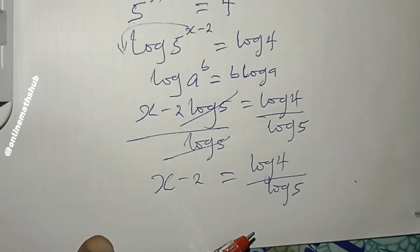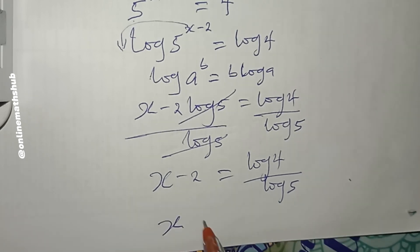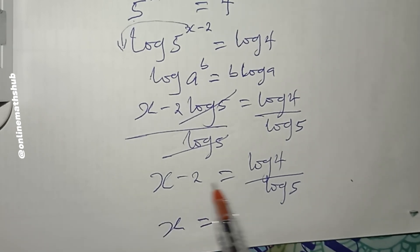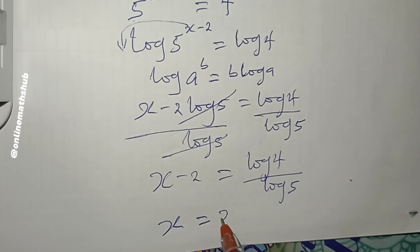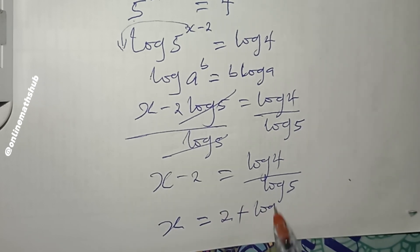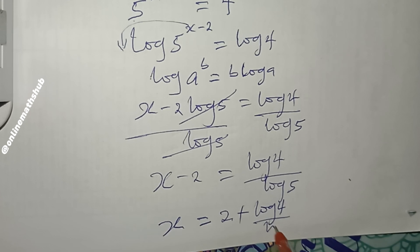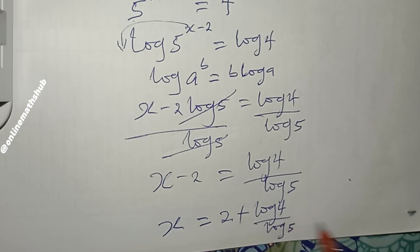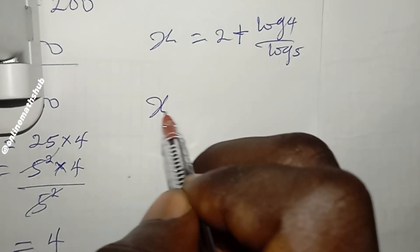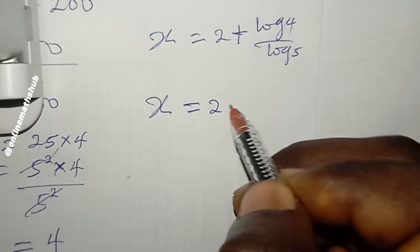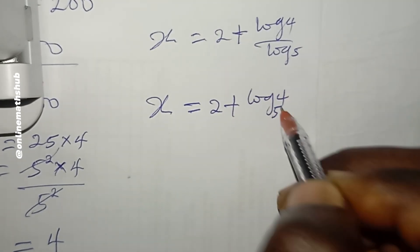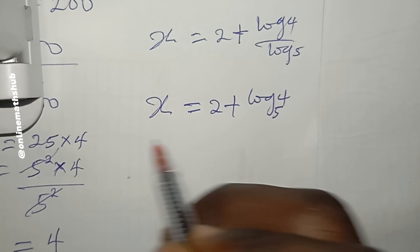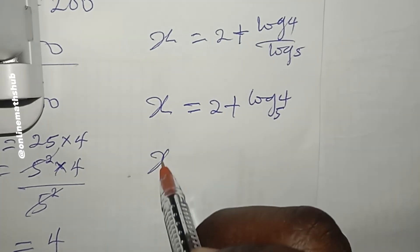From here we can get the value of x. Our x is now equal to, if I add 2 to both sides, 2 + log(4)/log(5). We can also write this as x = 2 + log₅(4). This is now our final answer.